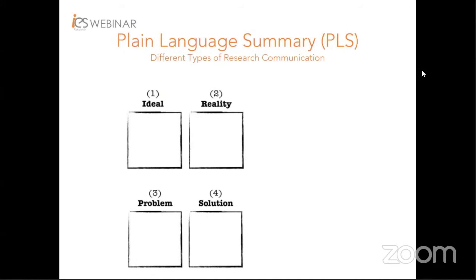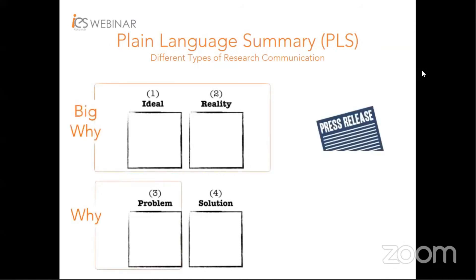Let's take a look at different types of research communication. A press release is often used to announce research findings to the general public. Since the general public might not have background knowledge of the subject, the bigger picture is presented with a description of the problem the research is aiming to solve. For example, if we were writing a press release about a new therapy on lung cancer, we might need to address that lung cancer is the number one killer in comparison to other cancers, to emphasize the severity of the problem and raise awareness.